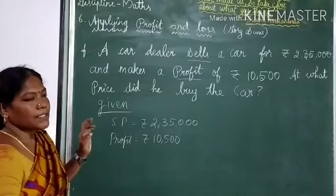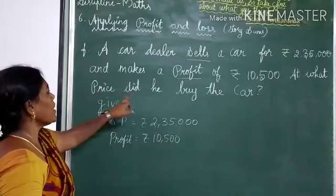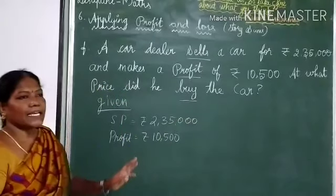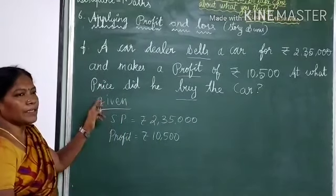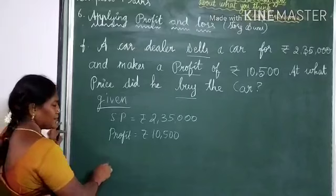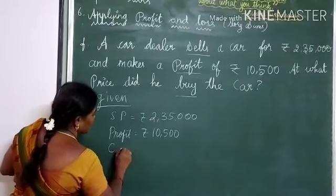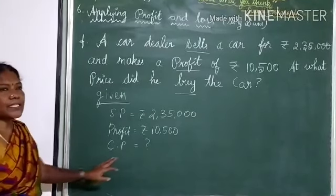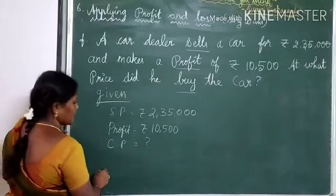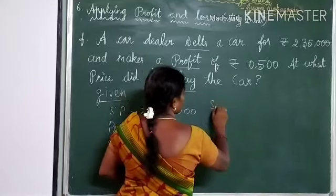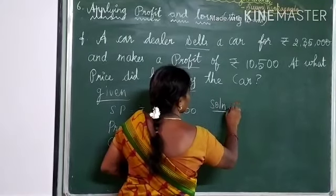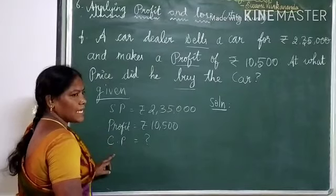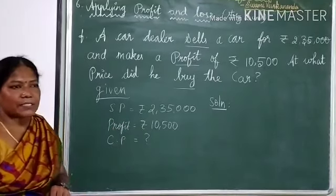Then what was to be found? At what price did he buy the car? Buying means cost price. So we have to find out the cost price — it was not given. Now we have to find out the cost price. Come to the solution. Selling price and profit were given.